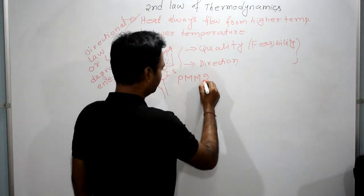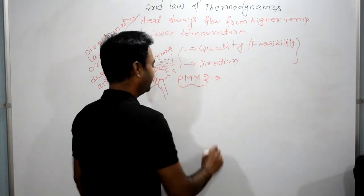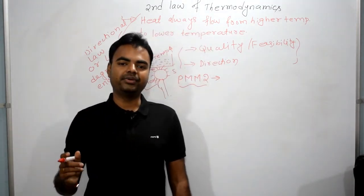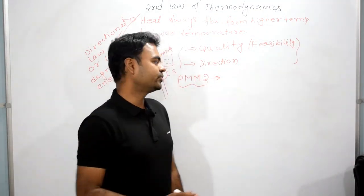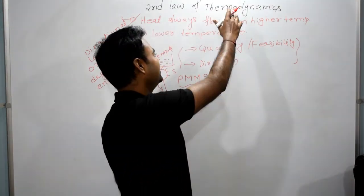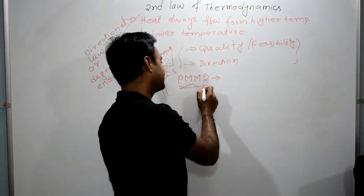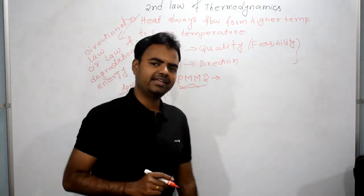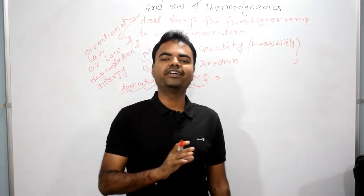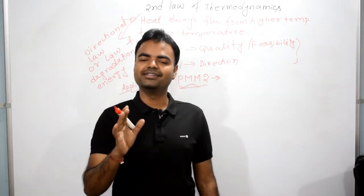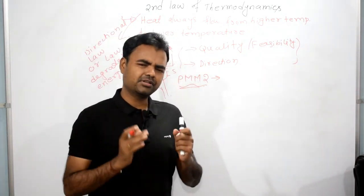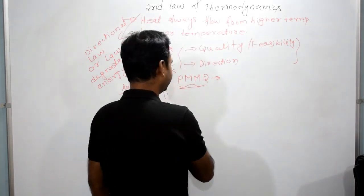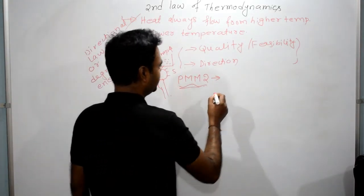From the second law we also get the concept of PMM2 — Perpetual Motion Machine of the second kind. I have created a separate video for PMM1, PMM2, and PMM3. PMM2 states that complete conversion of heat into work is impossible.